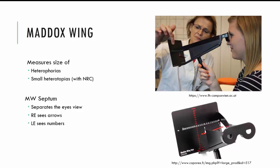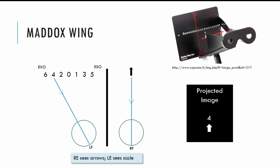Okay, so what's happening during testing is that the view of the eyes is separated by the plates of the Maddox wing. We can see here that there's a septum here and a plate here as well. And essentially the right eye will see the arrows whilst the left eye will see the numbers.